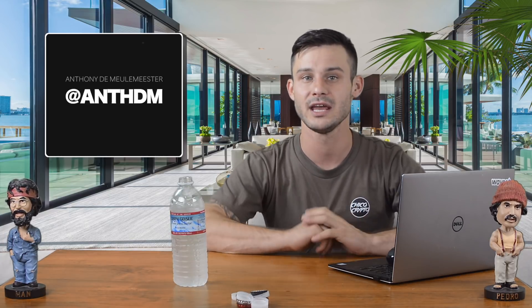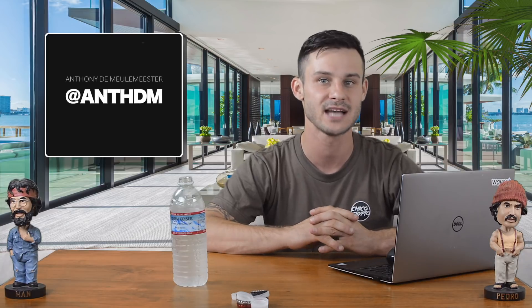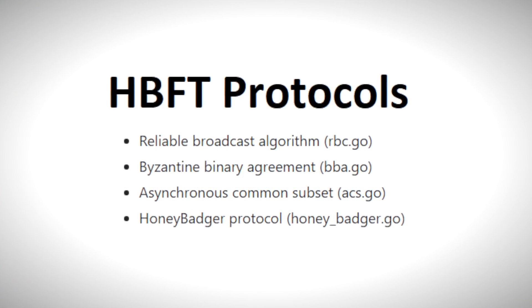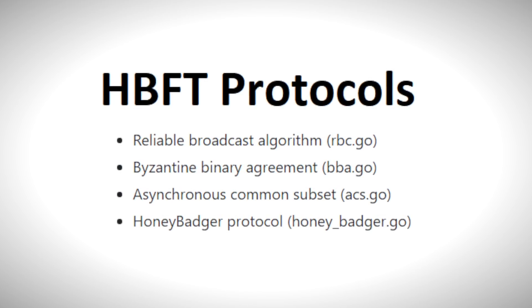Now that we have a general understanding of DBFT, let's take a look at the improvements of the BFT consensus worked on by the community. The winner of the bounty was Anthony D. Mulemeister, aka AnthDM, who was able to implement the asynchronous consensus called Honey Badger BFT. HBFT is a variation of BFT and it guarantees the liveliness of the network even when the nodes are behaving faulty. The algorithm contains four main protocols implemented into modular building blocks: Reliable Broadcast Algorithm, Byzantine Binary Agreement, Asynchronous Common Subset, and the Honey Badger Protocol. With this, it guarantees that all good nodes output the same set of transactions in each epoch. This makes it really interesting, as we don't need to elect new leaders — the network can keep committing transactions instead of wasting time and bandwidth on leader elections.